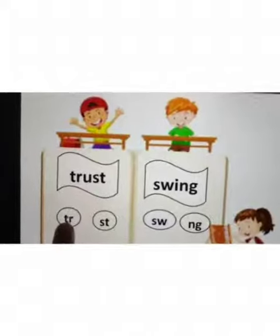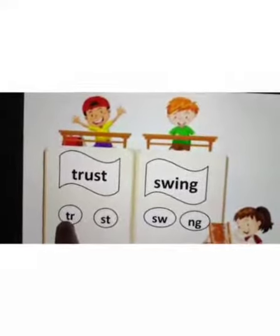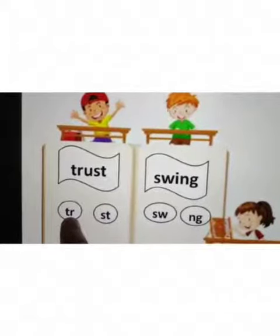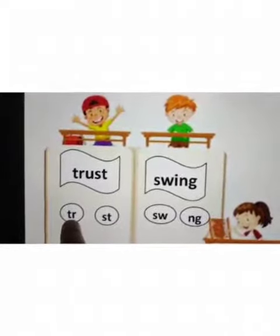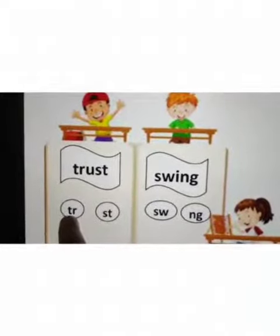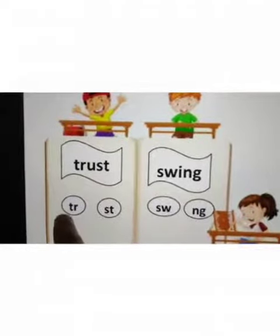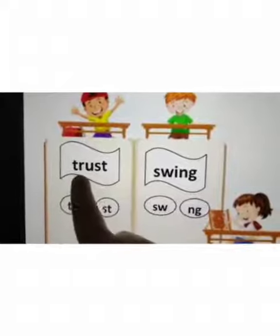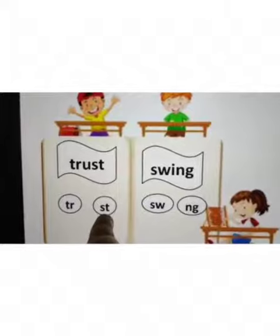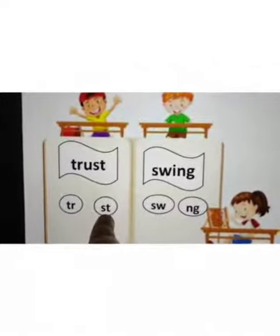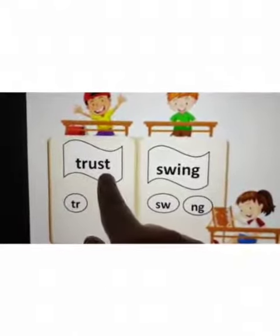Now in this, T and R is a blend. When these two are put together, T and R, it makes a TR sound. You are hearing the sound of both these letters — that is what a blend is. So this word has two blends: one is TR and the other is ST. So this word is TR-A-ST, trust.